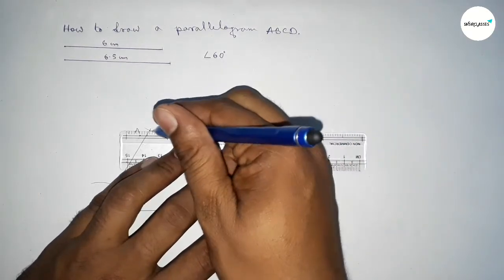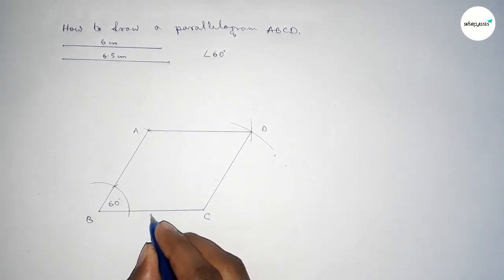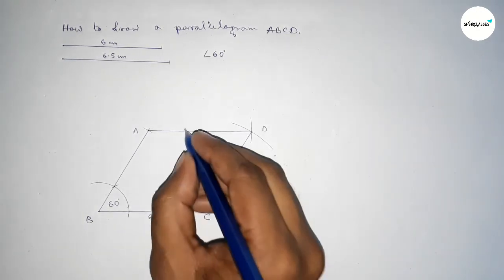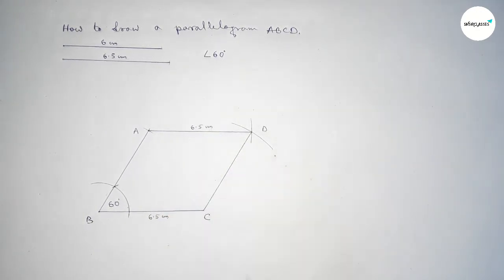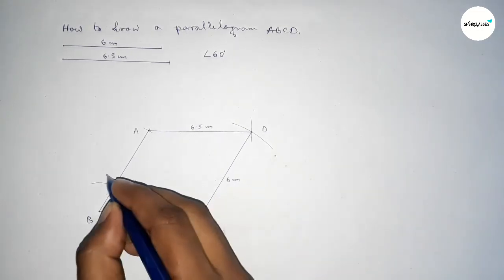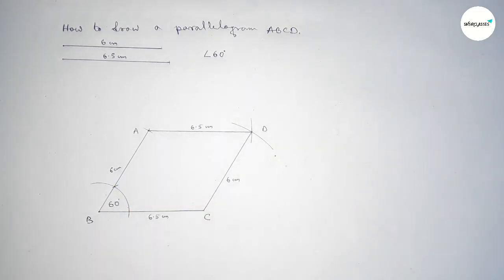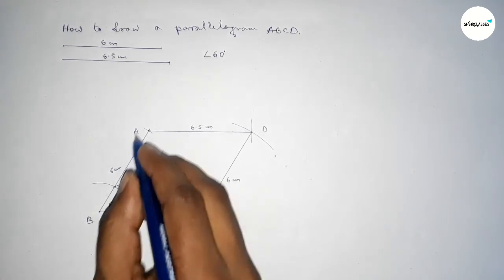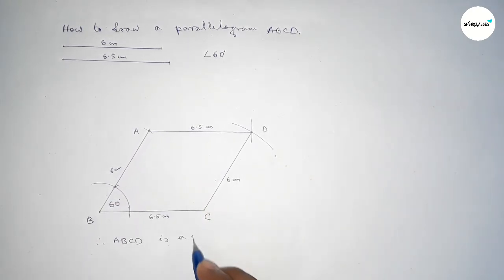First joining the CD line, then joining the AD line. So this side is 6.5 centimeters and the opposite side is also 6.5 centimeters; this side is 6 centimeters and the opposite side is also 6 centimeters. Therefore ABCD is a parallelogram.